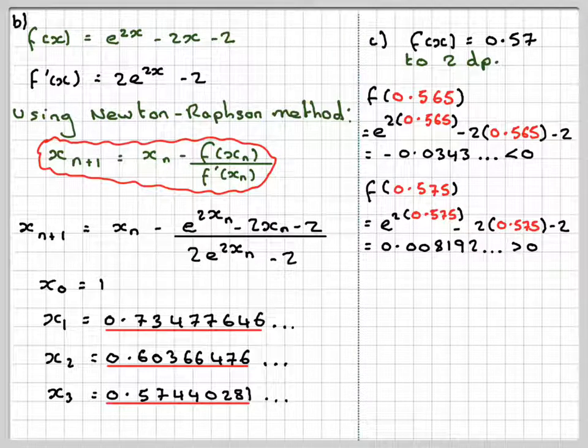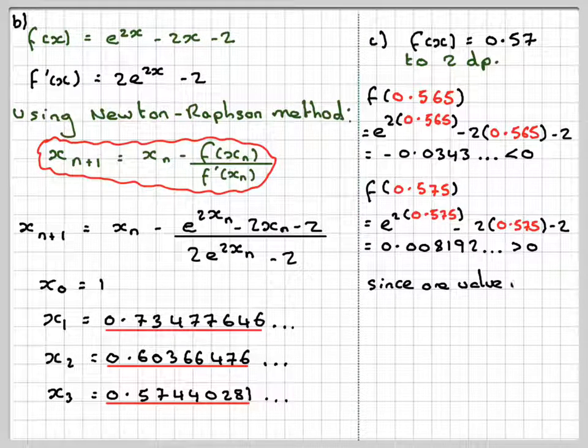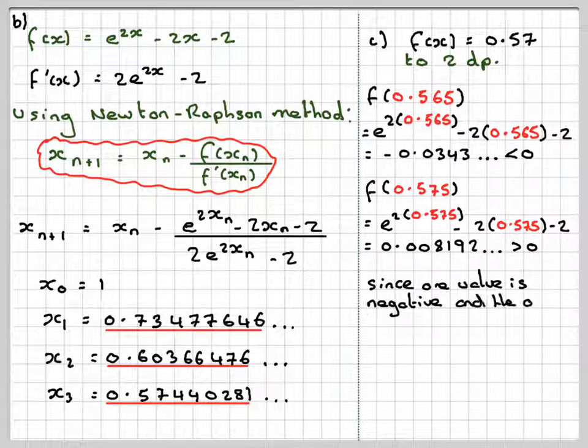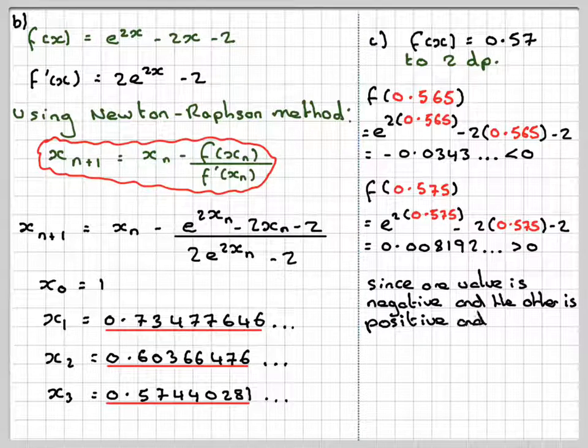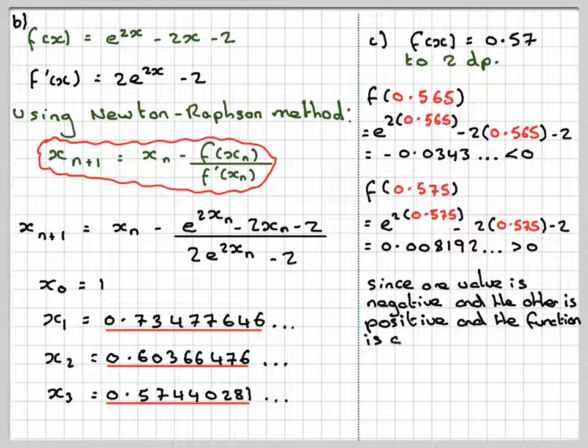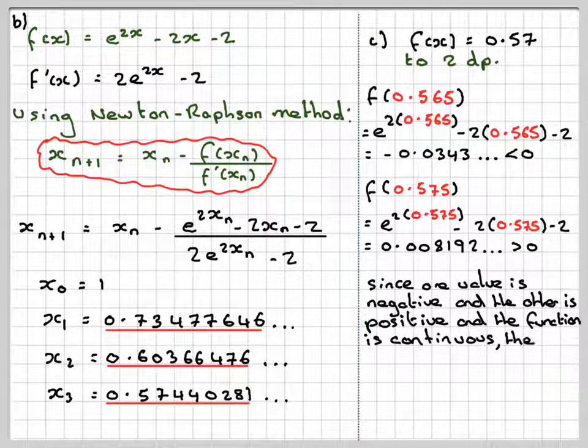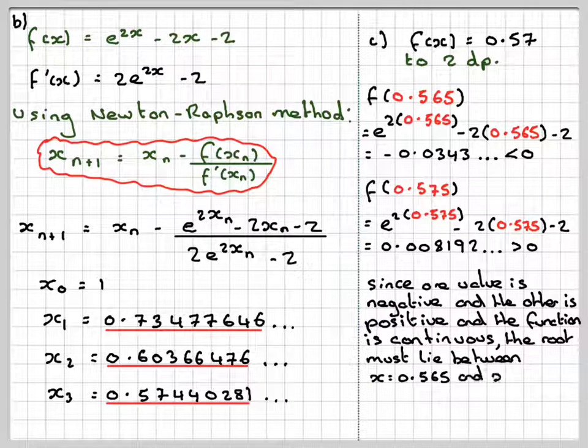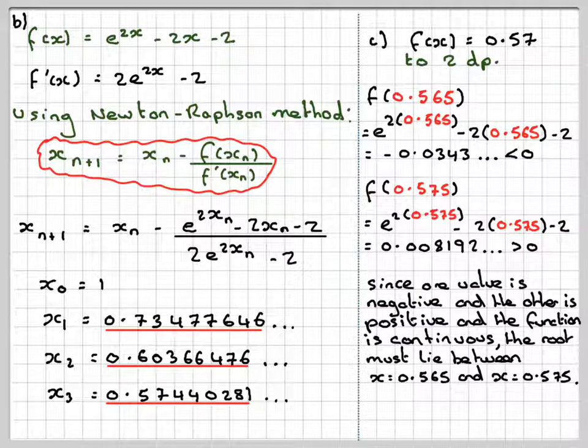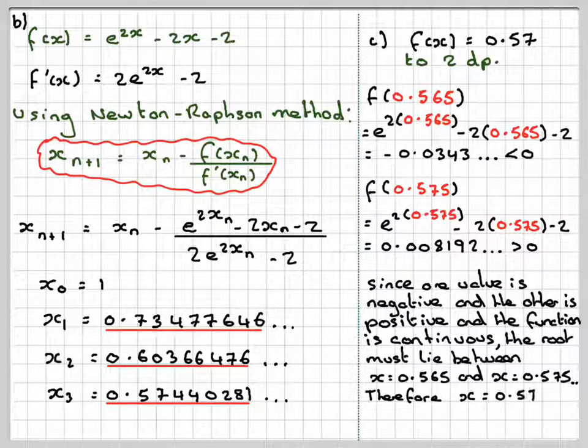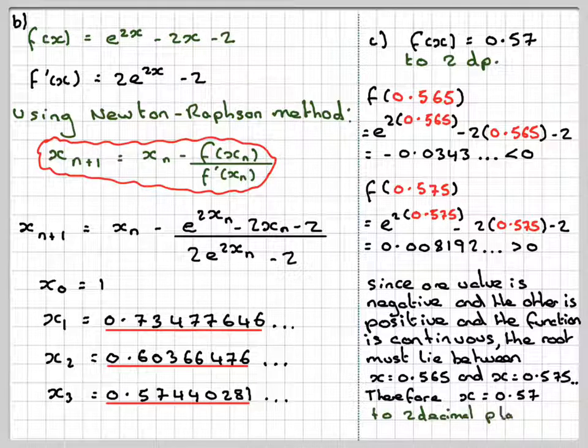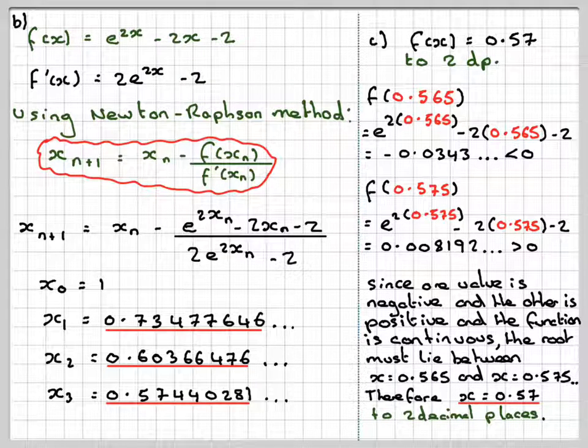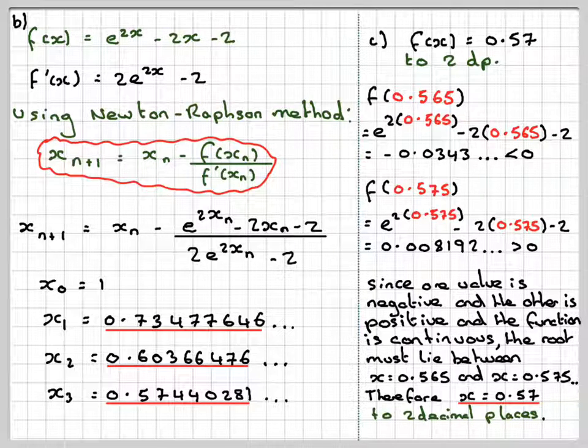Therefore, we have a change of sign, and the function is continuous. So since one value is negative and the other is positive, and the function is continuous, then the root must lie between x is equal to 0.565 and 0.575. Therefore, x is equal to 0.57 to two decimal places will be okay for our approximation.